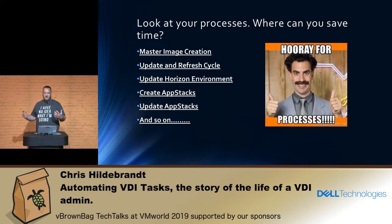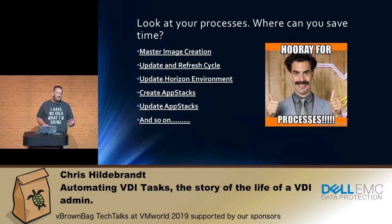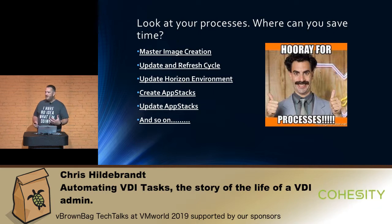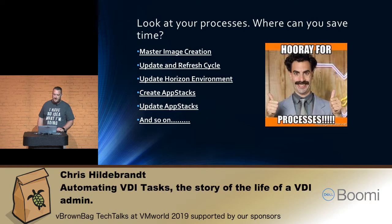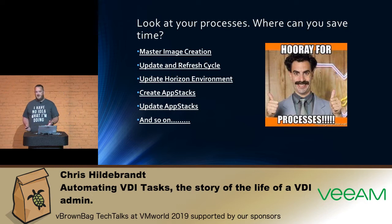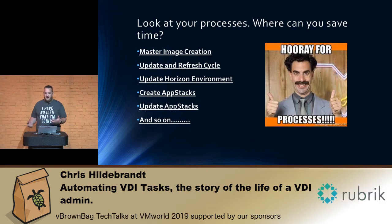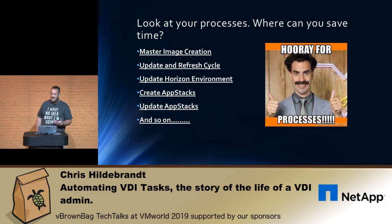Stepping back, we looked at our processes — what we were doing, how we were doing them, and what took the most time and what realistically offered the most time savings with the least amount of effort to automate, so we could continually automate other things on top of that. From master image creation, which you don't do very often, to the update and refresh cycle, updating the Horizon environment, creating and updating app stacks.